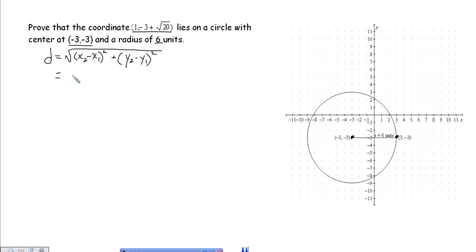We find that x sub 2 is negative 3, x sub 1 is 1, and y sub 2 is negative 3, and y sub 1 is negative 3 plus the square root of 20, all squared.